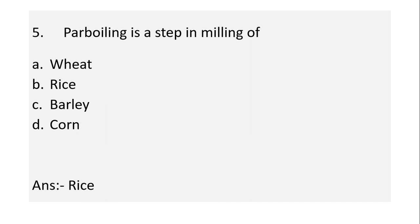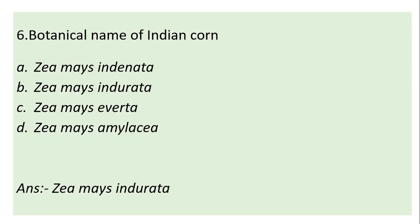Next question 5: Parboiling is a step in milling of wheat, rice, barley, or corn. Answer is rice. Next question 6: Botanical name of Indian corn.